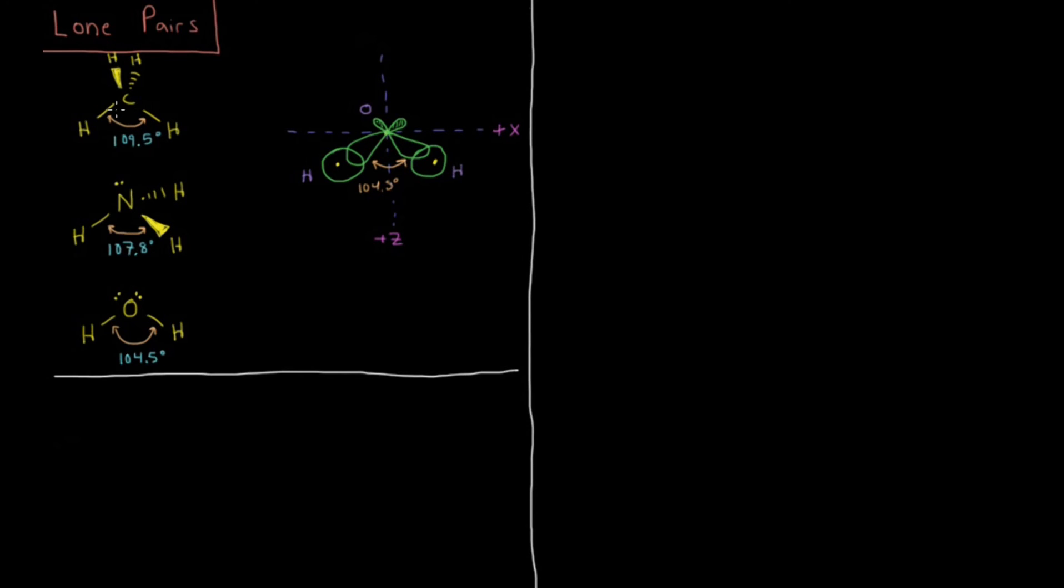If we look at methane, CH4, it has a bond angle between any pair of hydrogens of 109.5 degrees, and that's the bond angle you get when you have a perfect tetrahedron.